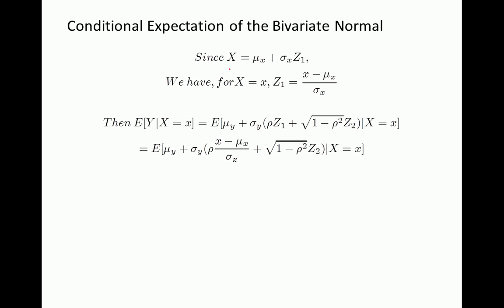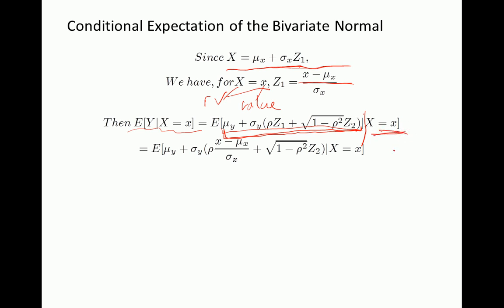We approach it this way: since x equals mu x plus sigma x times z1, let's compute z1 for a certain value of x. If the random variable x takes on the value small x, then z1's realization equals (x minus mu x) divided by sigma x. So the expectation of y given x equals small x is the expectation of the expression for y, conditional on x taking that value. We substitute the expression we found for z1 into y.